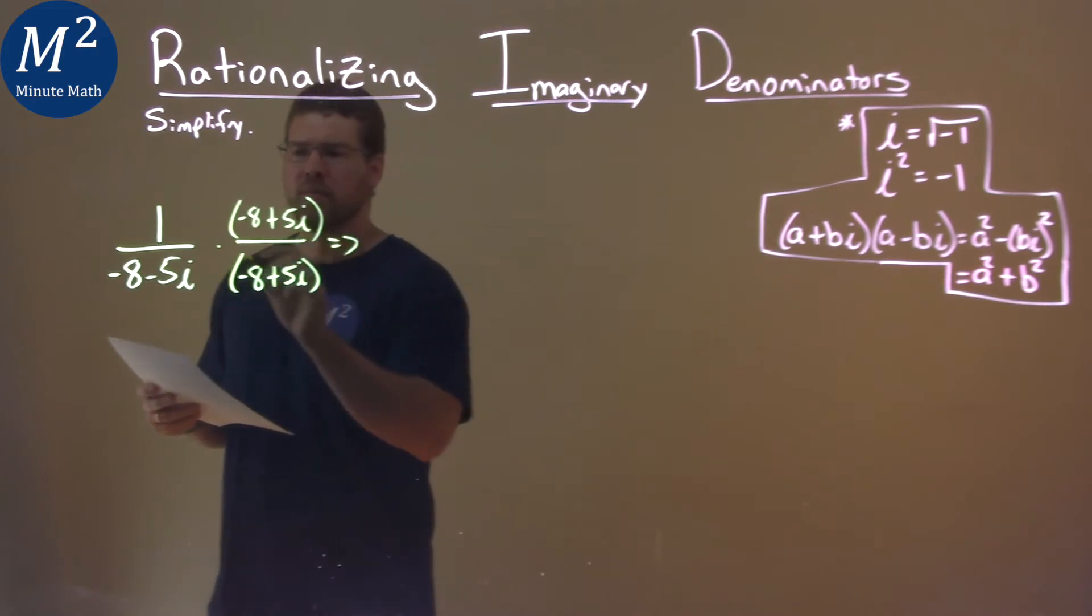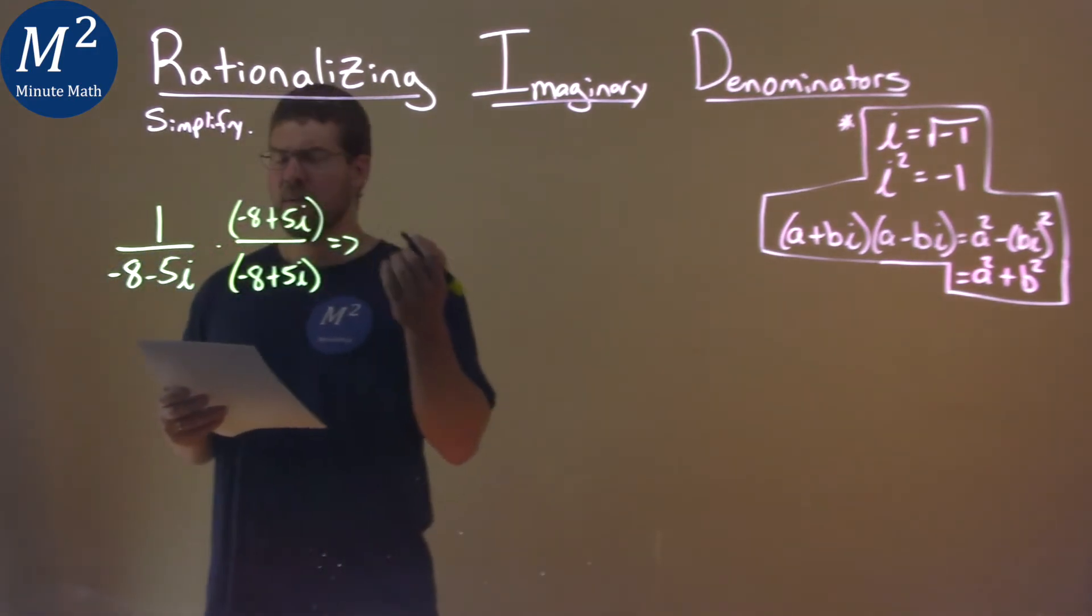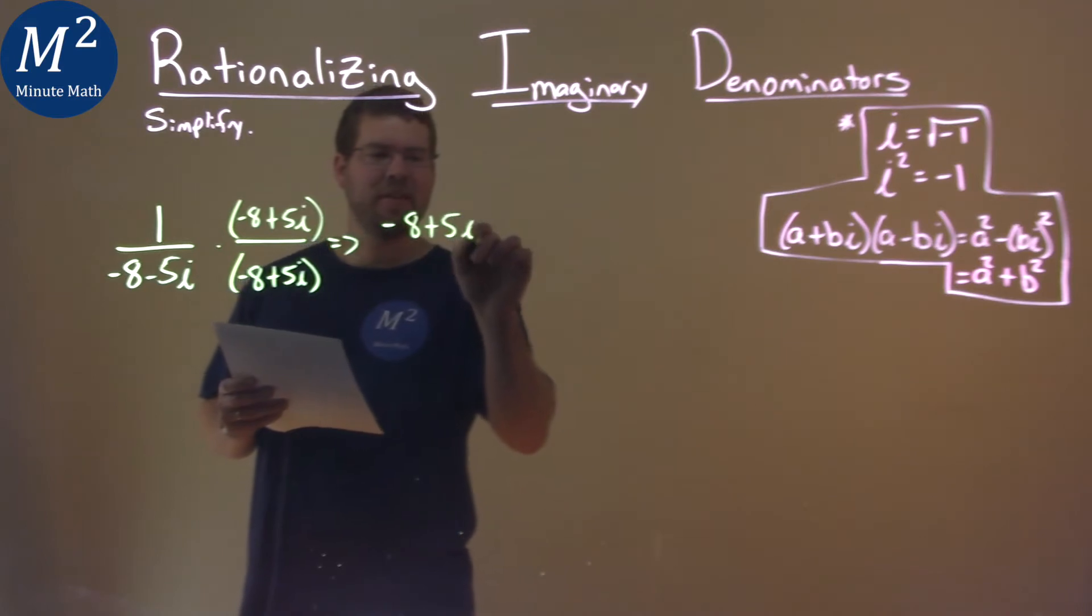So, what happens when we do that? Well, numerator, 1 times negative 8 plus 5i is negative 8 plus 5i. Pretty easy.